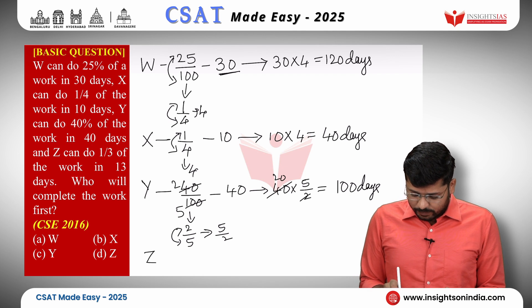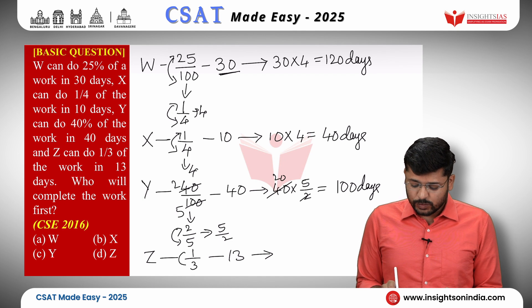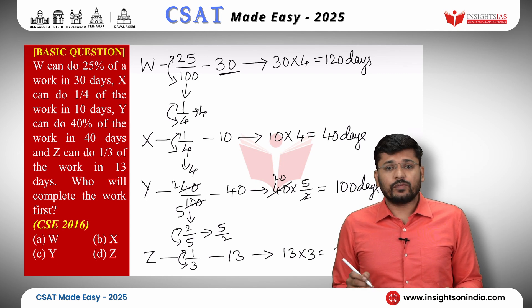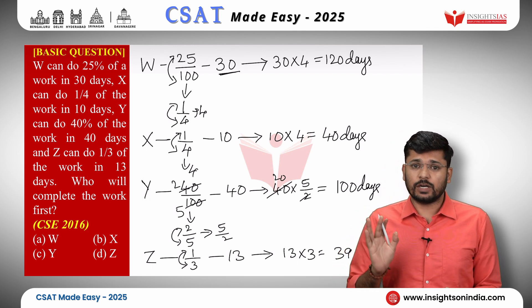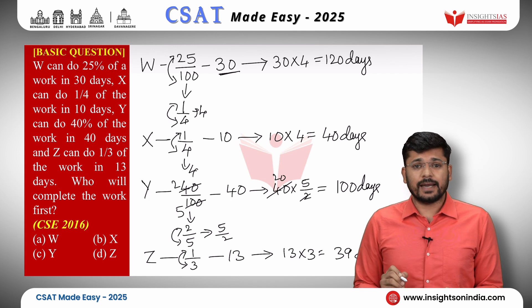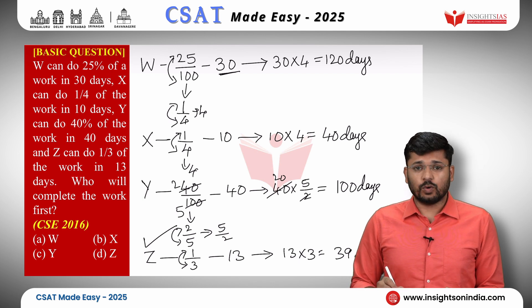Now for Z. Z does one-third of the work in 13 days. 1/3 is already in reduced form. Inversing 1/3 gives 3, and 13 multiplied by 3 is 39 days. So Z takes 39 days. Summarizing: W takes 120 days, X takes 40 days, Y takes 100 days, and Z takes 39 days. Z takes the least time, so Z will be the first one to finish the work.